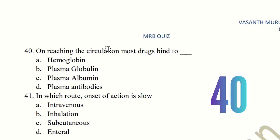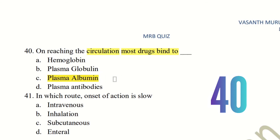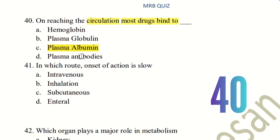Question 40: On reaching the circulation, most drugs bind to what? The choices are hemoglobin, plasma globulin, plasma albumin, and plasma antibodies. Hemoglobin binds oxygen, not drugs. Plasma globulin is similar but not the primary drug-binding protein. When drugs enter the blood, they primarily bind to plasma albumin. That is the right answer — drugs bind to plasma albumin and are then distributed throughout the body.